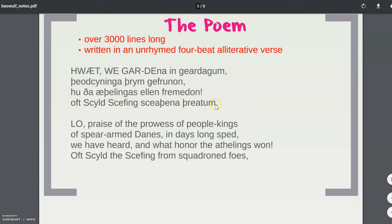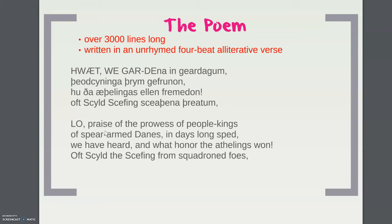Four-beat means there are four stressed syllables in the poem — for example: 'Lo, praise the prowess, people, kings.' You have four beats within the poem. And it's written in alliterative verse, meaning there are repetitions of consonant sounds: 'Praise the prowess of people-kings, of spear-armed Danes and days long sped. Scylded the Scoffing from squadron foes.' You hear that repetition of consonants — P's, D's, and S's — woven into the beat.